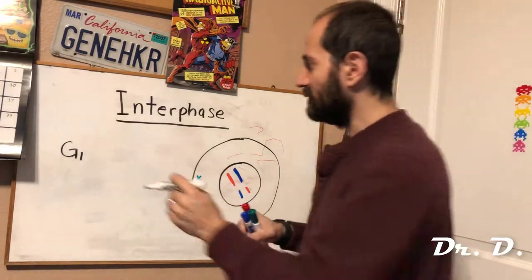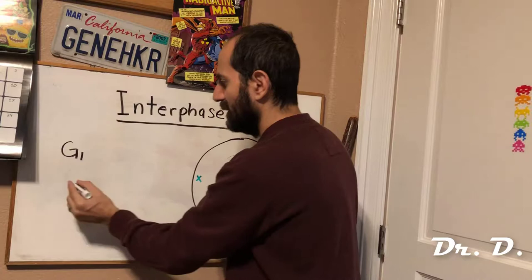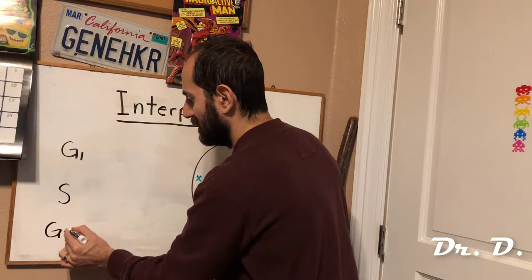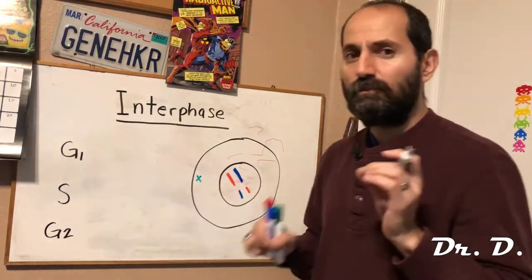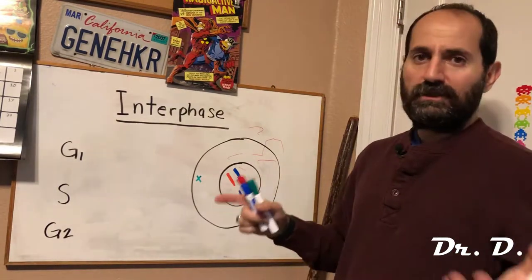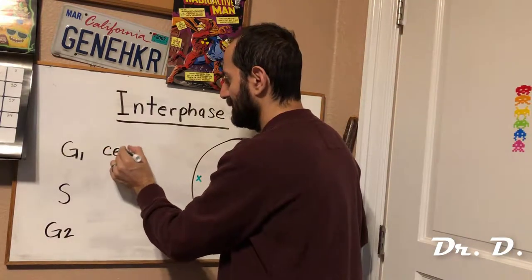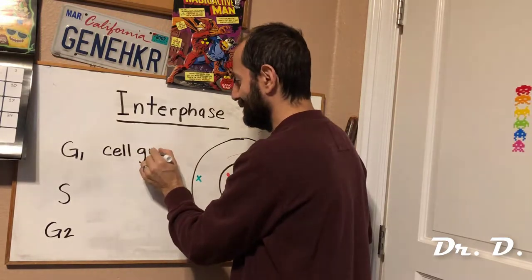So during G1, what's going on during the first sub-phase of interphase? There's G1, and then there's S, and then there's G2. So we're going to talk about all of these sub-phases of interphase. During G1, the cell generally grows. That's what I need you to know about that. The cell undergoes growth, cellular growth.